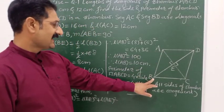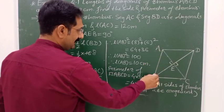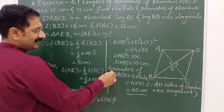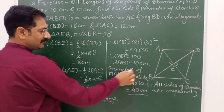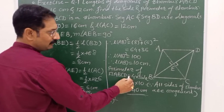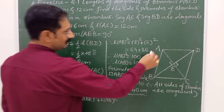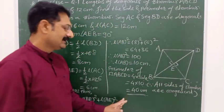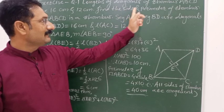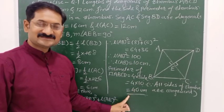AB is the side of the rhombus, and since all sides of a rhombus are congruent: AB = 10, BC = 10, CD = 10, DA = 10. The perimeter of rhombus ABCD is 4 × 10 = 40 cm. So the side of the rhombus is 10 cm and the perimeter is 40 cm.